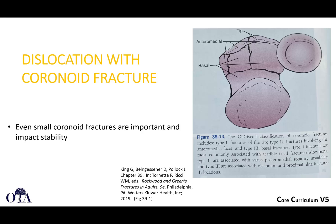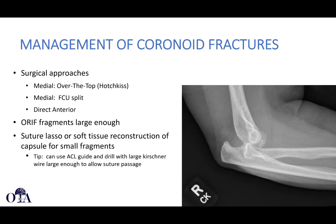Coronoid fractures: even small coronoid fractures are important and can impact stability. Same as with the radial head — when you have a coronoid fracture and elbow instability, you're probably going to have to address the coronoid in most cases. Where that fracture occurs is mapped out here, shown as a view looking straight down at the coronoid rather than a lateral view. To reach these fractures, there are medial approaches or you could go direct anterior. If fragments are large enough, you want to do open reduction internal fixation with screws and plates and screws. For smaller fragments, you can potentially do suture lasso or soft tissue reconstruction.